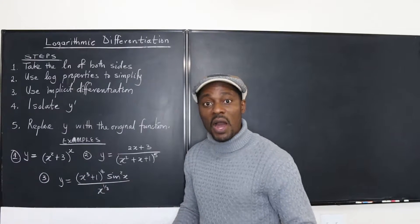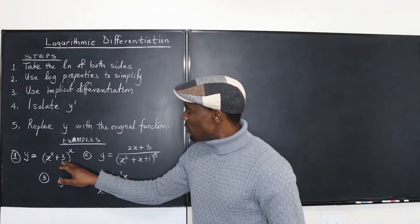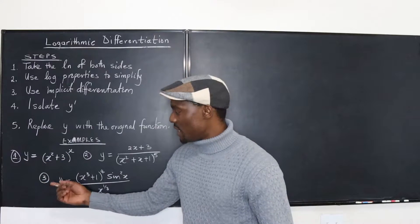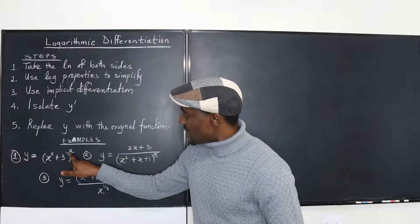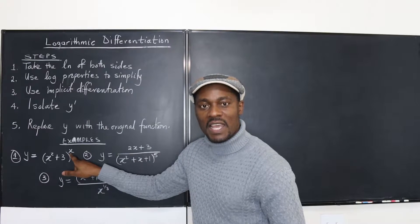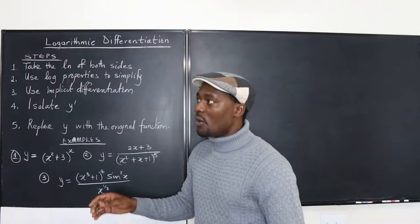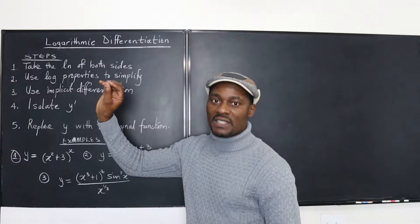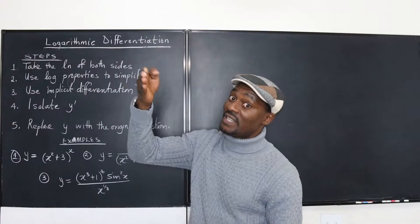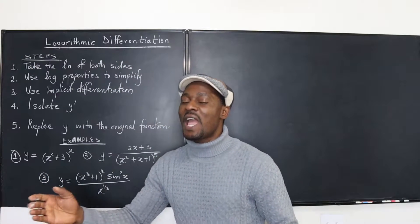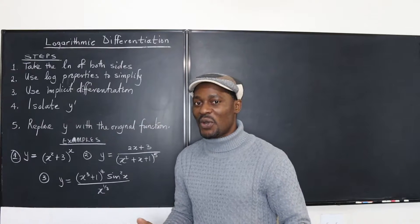But for number one, there is no other way, because if you try to do chain rule here, you can't — this is not a constant exponent. It's another variable, it's a function on its own. So when your exponent is a function on its own, there's nothing you can do. You just have to bring it down so you can use product rule, and the best way to bring down an exponent is to introduce logarithms.